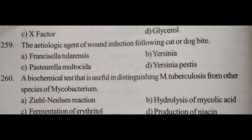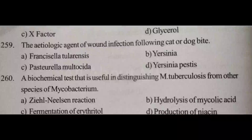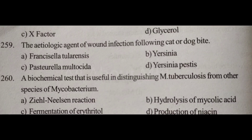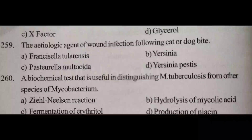The etiologic agent of wound infection following cat or dog bite. Option A: Francisella tularensis. Option B: Yersinia. Option C: Pasteurella multocida. Option D: Yersinia pestis. Answer is Option C: Pasteurella multocida.